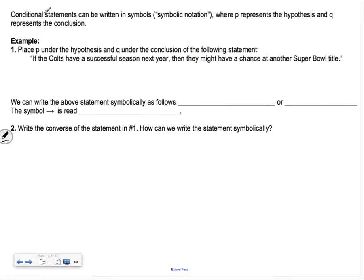Conditional statements can be written in symbols, so symbolic notation, where P represents the hypothesis and Q is the conclusion. In this example, if the Colts have a successful season next year, that's our P, then they might have a chance at another Super Bowl title, that's our Q. The way that we write it symbolically is we say if P, then Q, or we write P implies Q, so like a little arrow. That little arrow is read 'implies'.